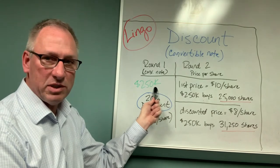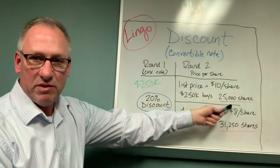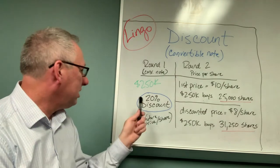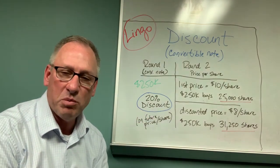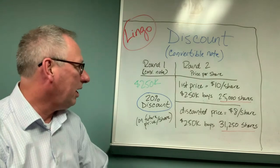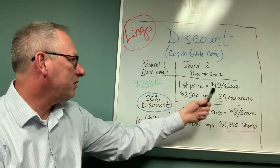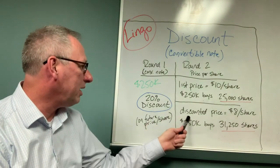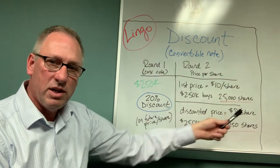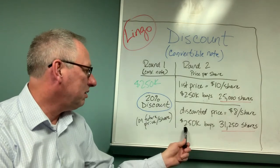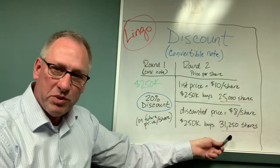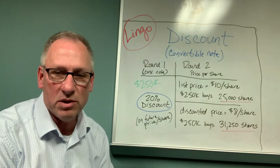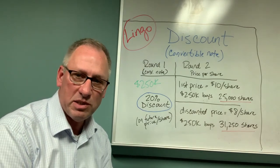At that price per share, this $250,000 without a discount is buying 25,000 shares. But let's say that a 20% discount is built into the convertible note up front. When that second round comes along and they do a list price of $10 per share, a 20% discount of that is $8 per share. And at that lower price, $250,000 buys more than 31,000 shares. So the discount allows that early stage investor to buy more shares.